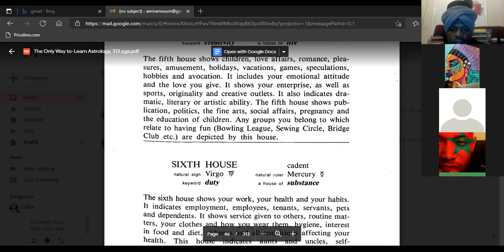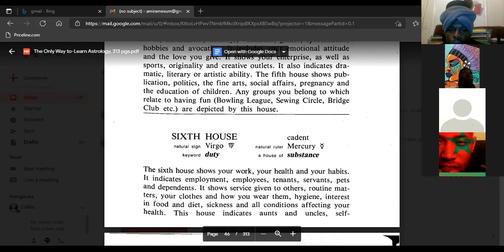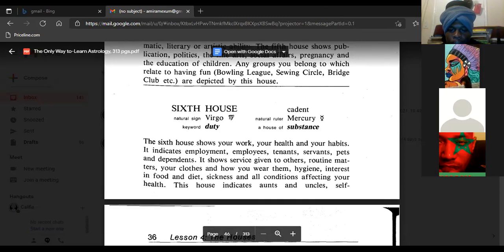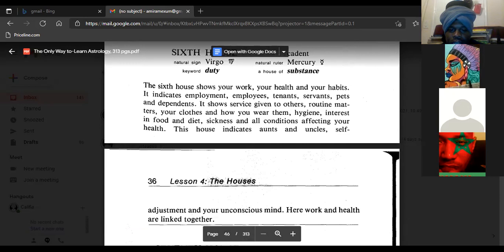Sixth house, natural sign Virgo, keyword duty, cadent, natural ruler Mercury, a house of substance. The sixth house shows your work, your health, and your habits. It indicates employment, employees, tenants, servants, pets, and dependents. It shows service given to others, routine matters, your clothes and how you wear them, hygiene, interests in food and diet, sickness and all conditions affecting your health. This house indicates aunts and uncles, self-adjustment, and your unconscious mind.